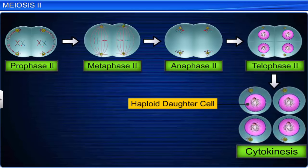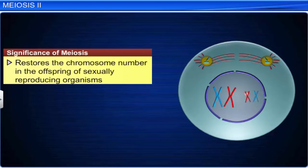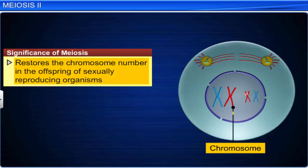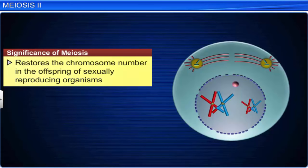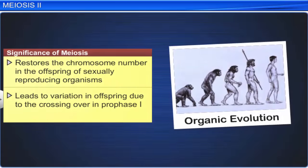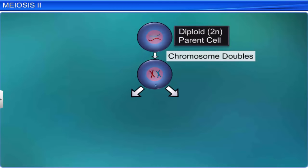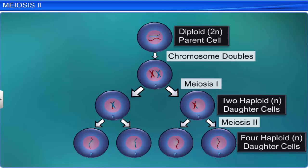Meiosis is a significant process in sexually reproducing organisms. Meiosis in germ cells, followed by the fertilization of gametes, restores the chromosome number in the offspring of sexually reproducing organisms. Another significant feature of meiosis is that it leads to variation in offspring due to the crossing over in prophase 1, during which genetic materials recombine. Variation plays a very important role in the process of organic evolution. Meiosis plays a vital role in sexually reproducing organisms; the process takes place only in reproductive cells or germ cells, and is also known as reduction division, as the number of chromosomes is reduced to exactly half in the daughter cells.